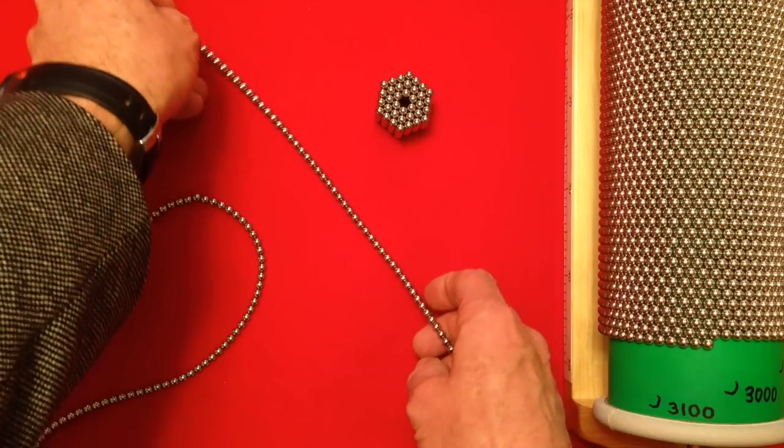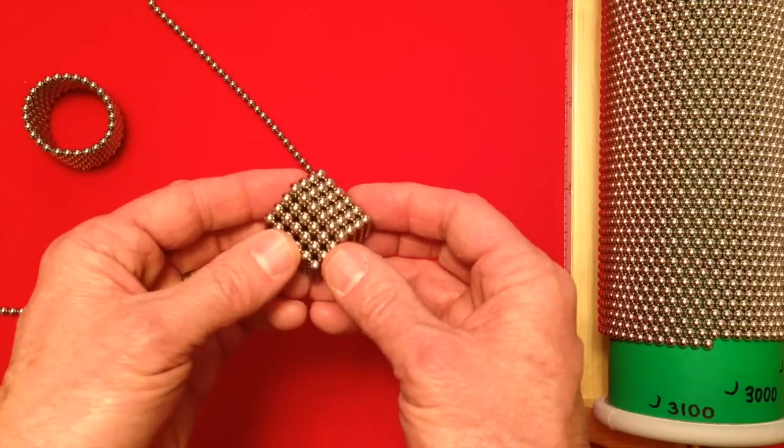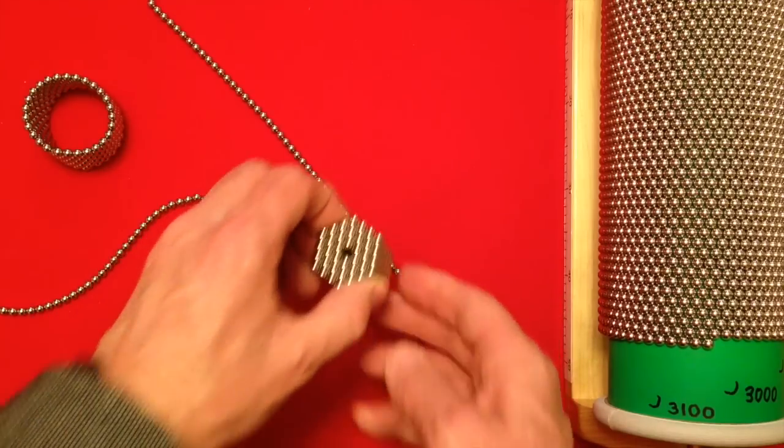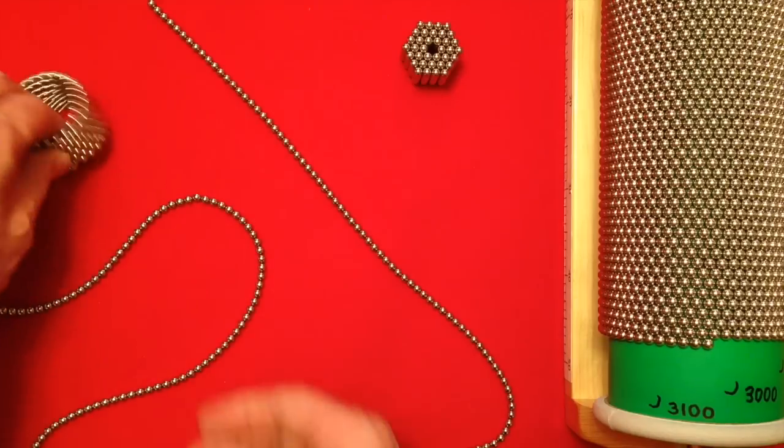Storing magnets in hexagonal form requires extra effort to put the magnets into this form for storage and extra effort to pull these hexagons into a chain for the next project.